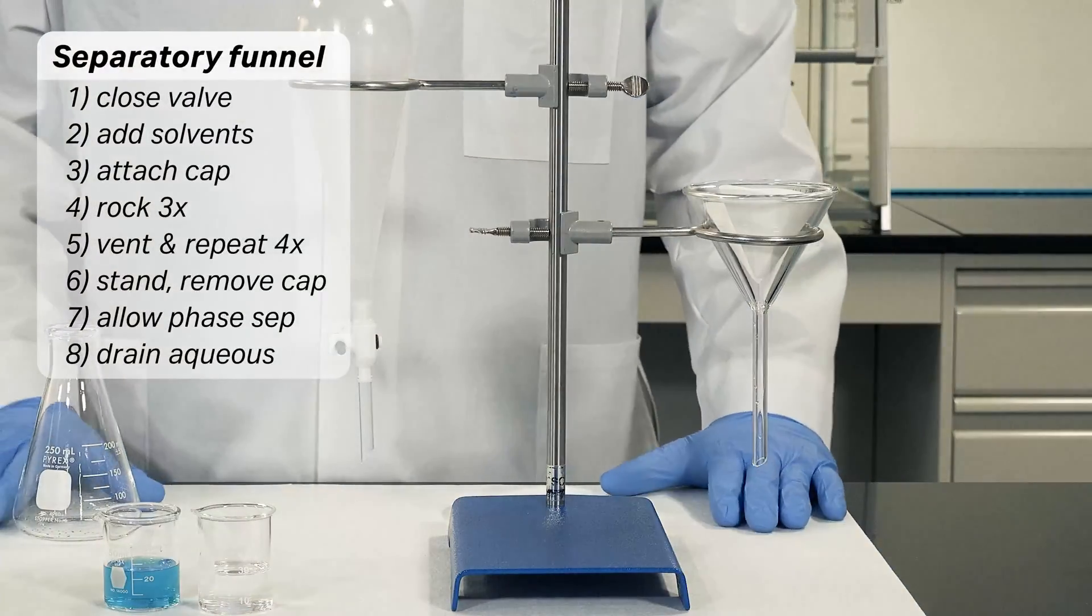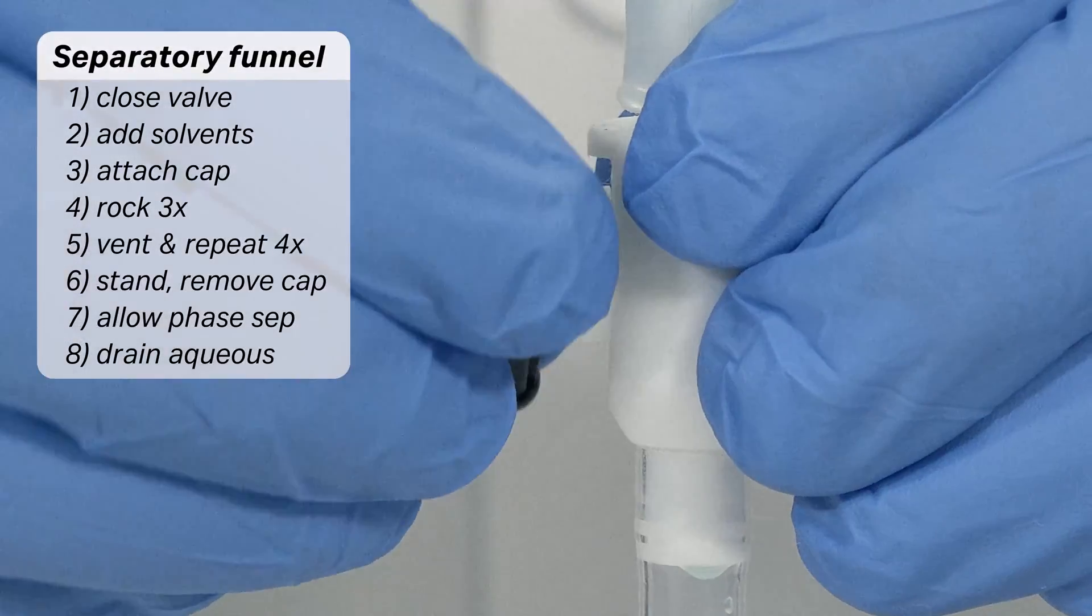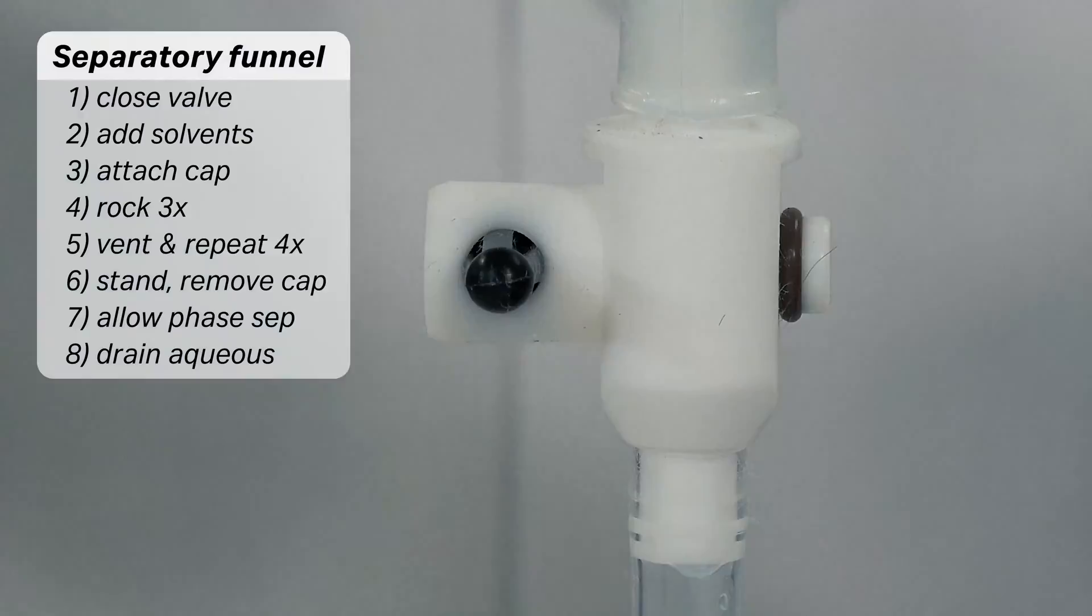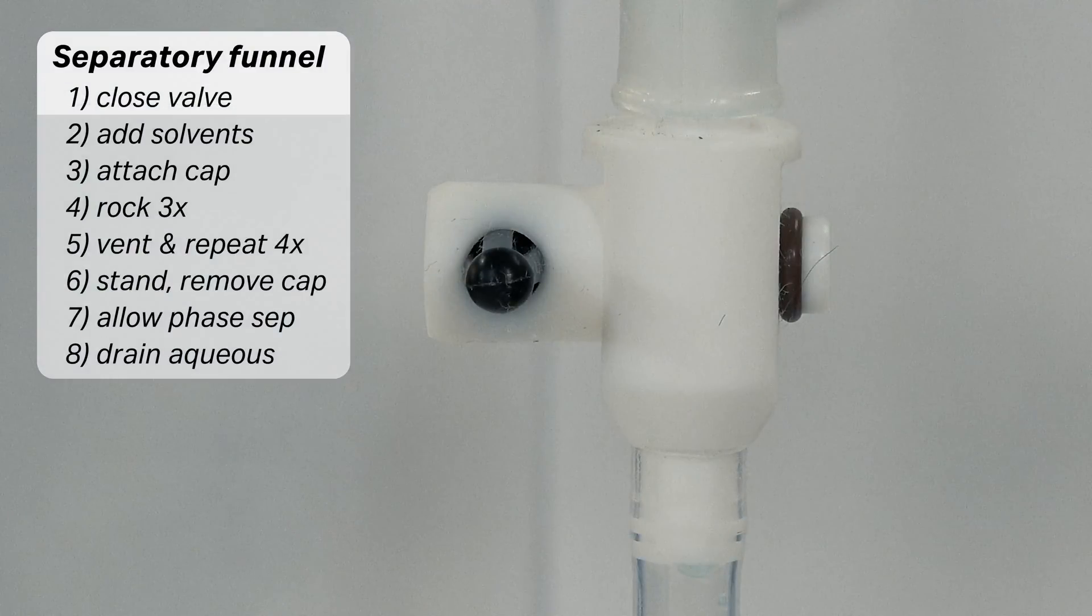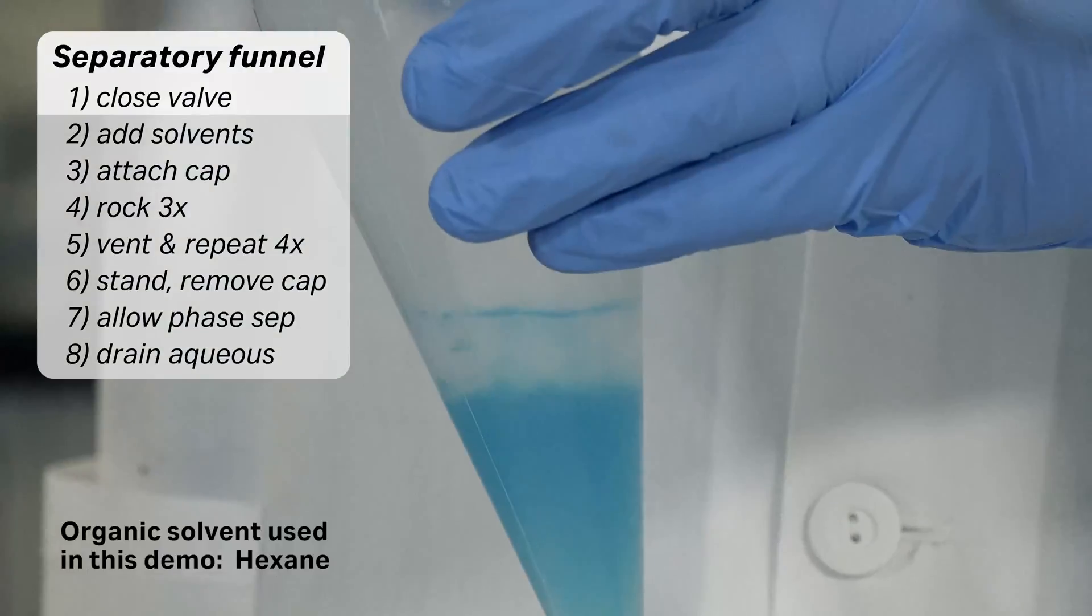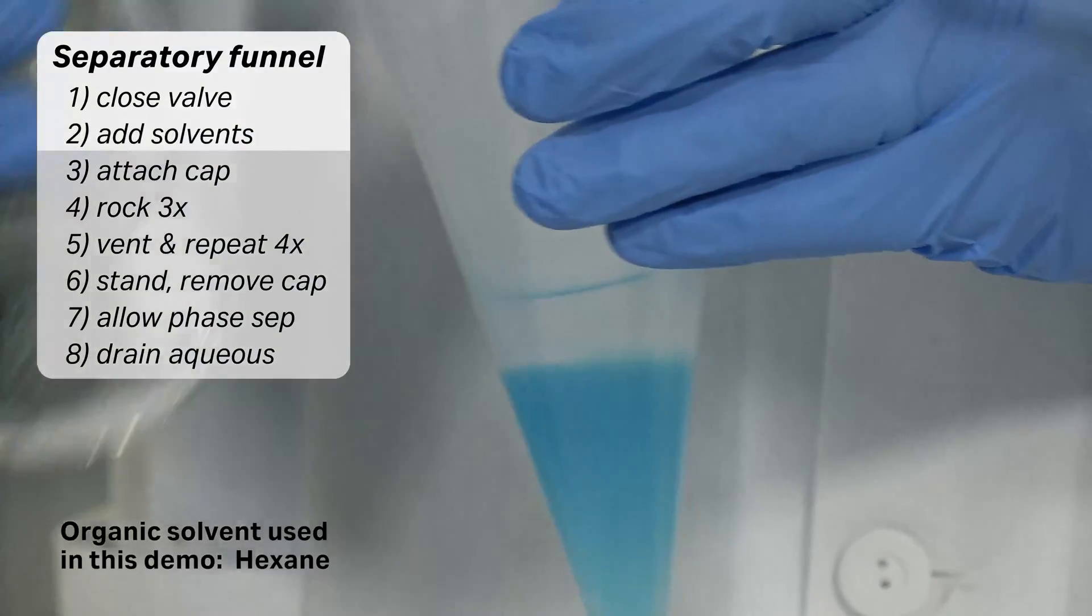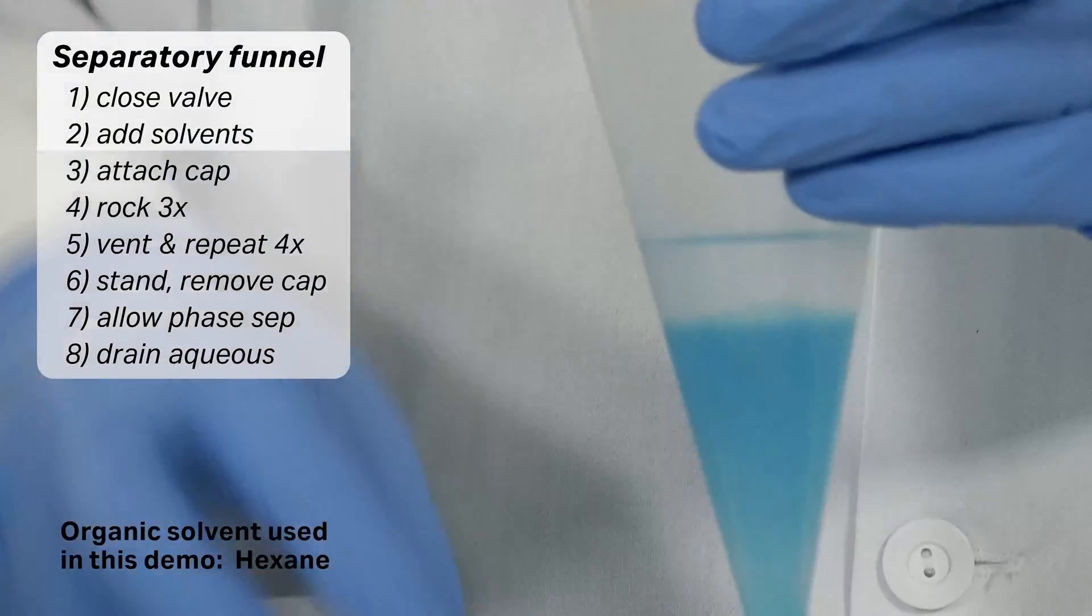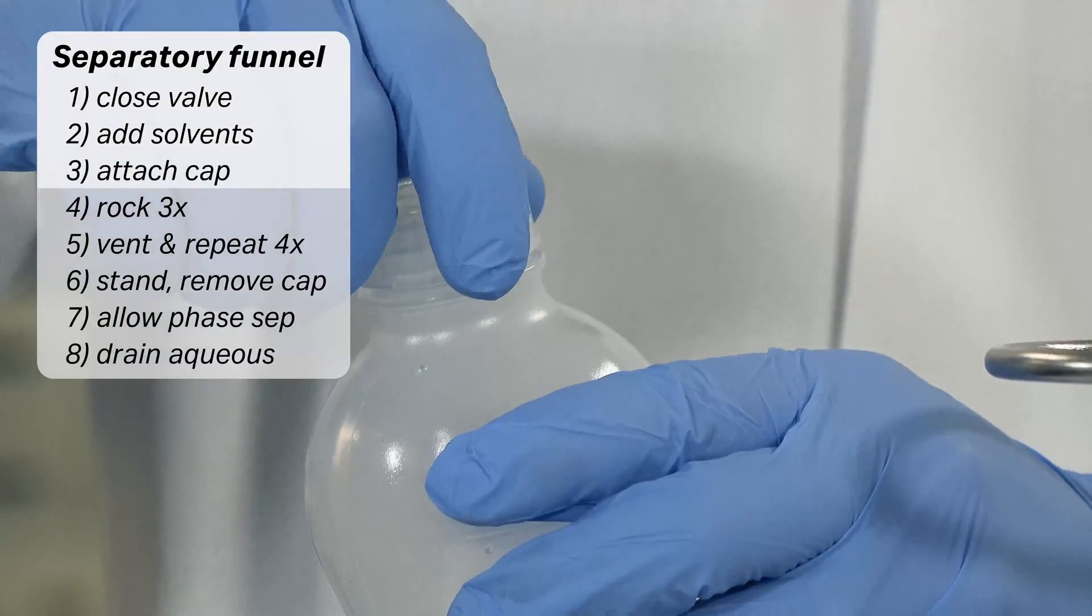First, let's use the standard separatory funnel. Ensure the valve on the separatory funnel is in the closed position. Add equal amounts of an aqueous and organic solvent to the separatory funnel. Attach the cap on the separatory funnel.